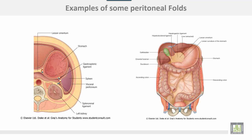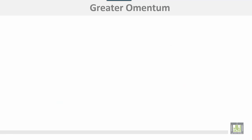This is again an example showing the stomach, the lesser omentum here. This is the mesentery of the small intestine, and this is the mesocolon. This is the gastro-splenic ligament, and this is the lienorenal ligament.